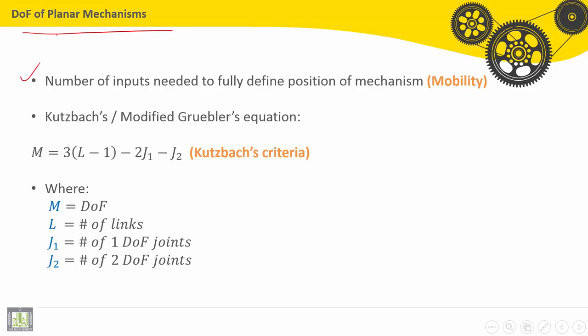First of all, it is the number of inputs needed to fully define position of mechanism. It is called mobility. Now, with Kutzbach's or modified Gruebler's equation, it is the following: M = 3(L - 1) - 2j1 - j2. This is called Kutzbach's criteria.